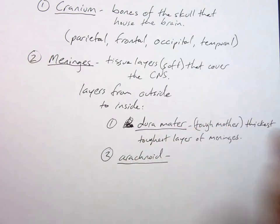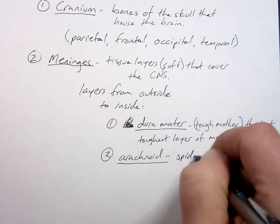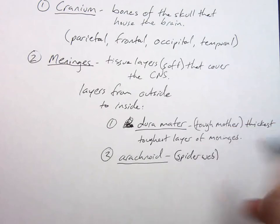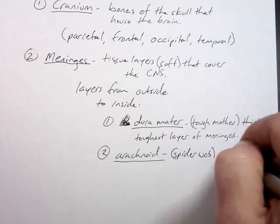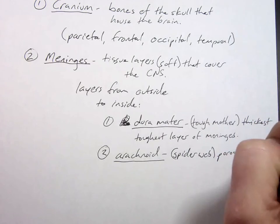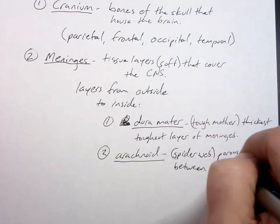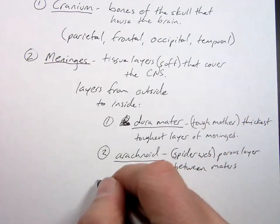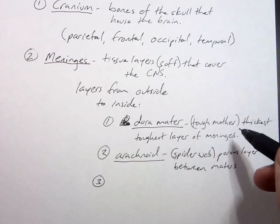Next layer is called the arachnoid. This layer is kind of like a spider web, which is perhaps where arachnoid came from because arachnophobia is fear of spiders. Is a porous layer between maters, which logically means what's going to be next.